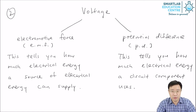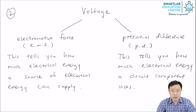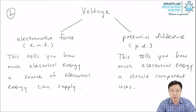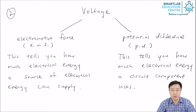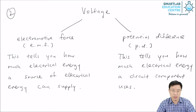At your level, the EMF of an electric circuit must be equal to the PD of the electric circuit, for the simple reason that the electrical energy supplied must be equal to the electrical energy used. The electrical energy used cannot exceed that which is supplied.